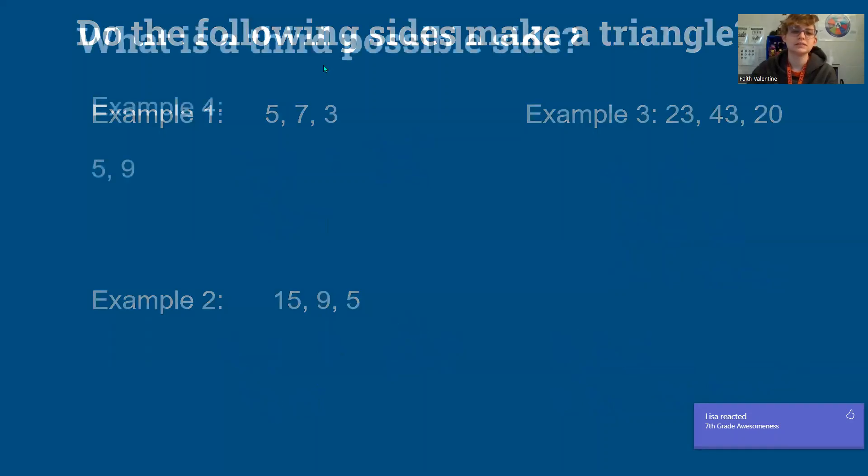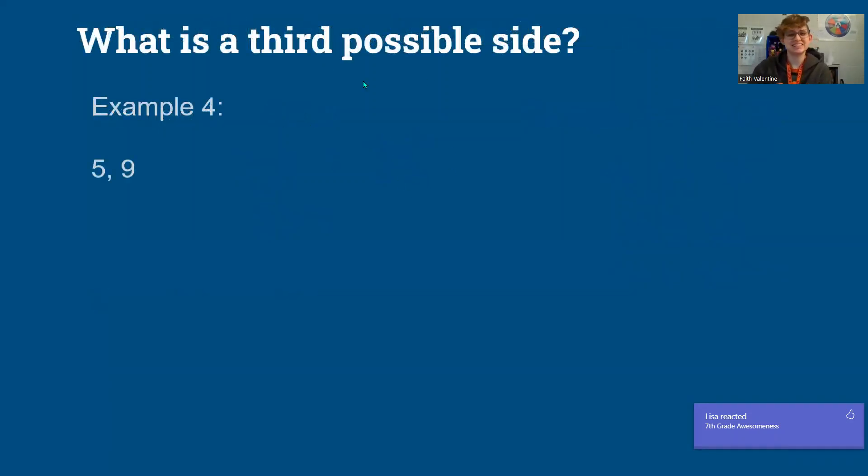So let's look at one last example. Now this example kind of just delves into what could a third side be. And there's two ways to look at this. The first is five and nine represent my small sides. So I would add five and nine and get 14. So I know 14 needs to be greater than my third side.